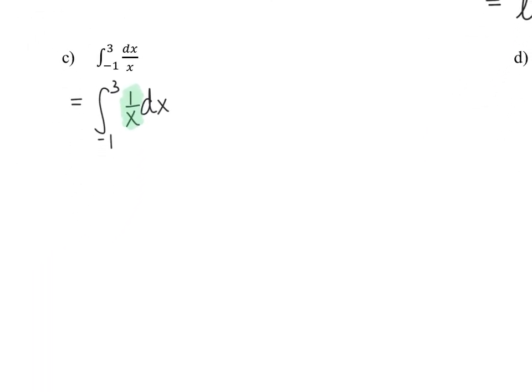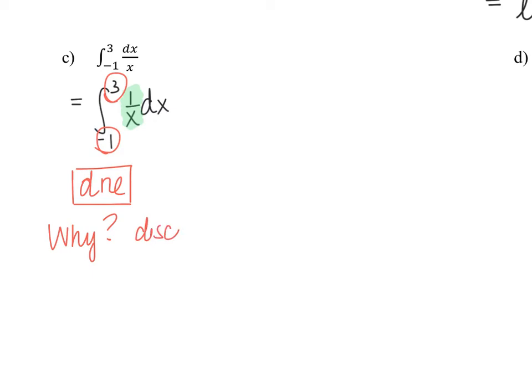In Example C, we're integrating from negative 1 to 3, and 0 is right in that interval — it's between negative 1 and 3. So we have a discontinuity within the interval, which means we cannot use the fundamental theorem of calculus here. We cannot find the antiderivative and proceed. This integral is undefined — it doesn't exist, so we write DNE. The supporting reason: discontinuity at x equals 0, specifically an infinite discontinuity. Always check that the function is continuous on the given interval.